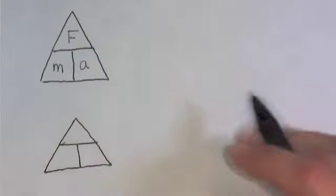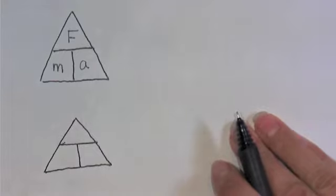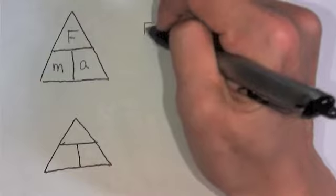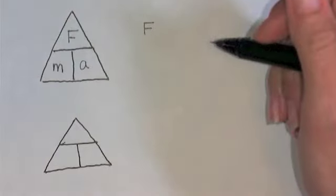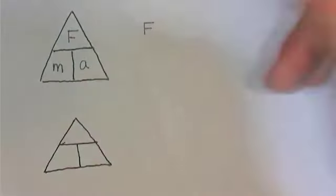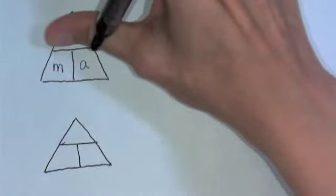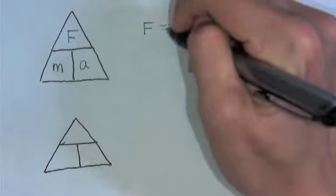And how it works is if you take one of these variables, such as F, and cover it, then F is equal to M times A. So that's how we know we get the MA there.